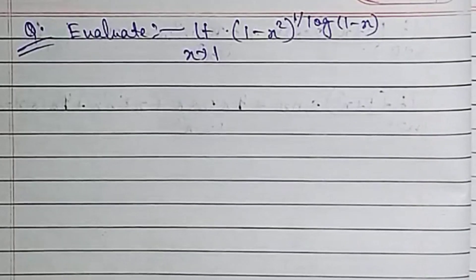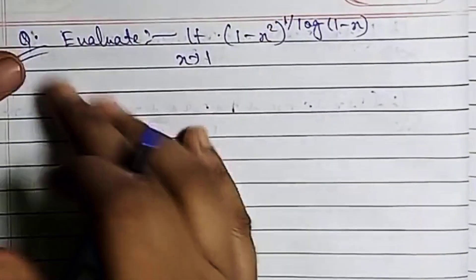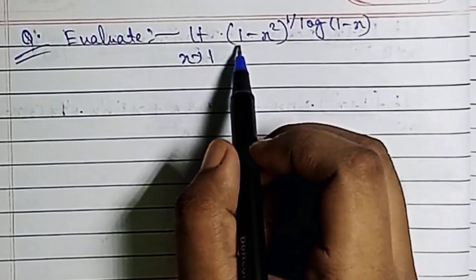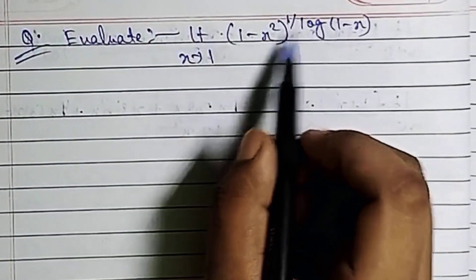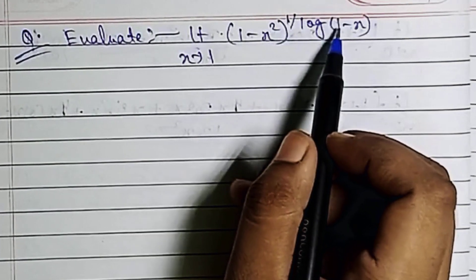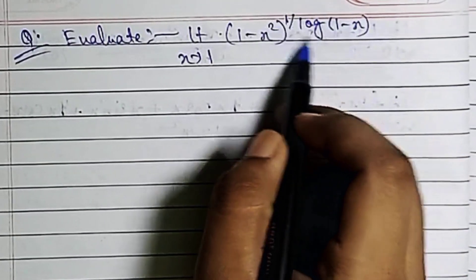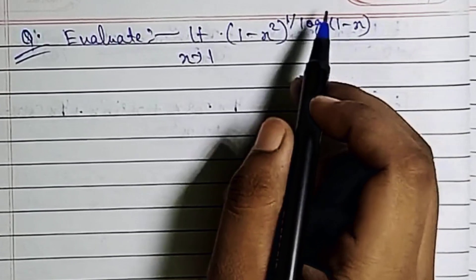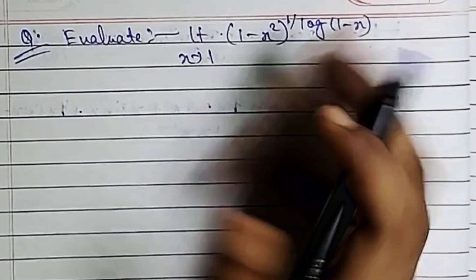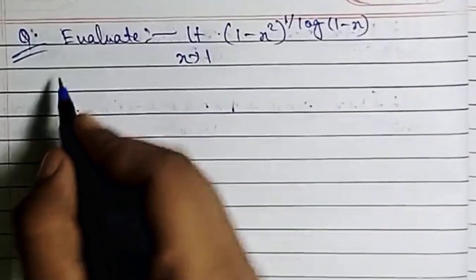Hello everyone and welcome to the channel. For all our new viewers, this is the channel. This problem is about limits — specifically limit x tends to 1 of (1-x²)^(1/log(1-x)). If you want to copy this, you need to be concerned with potential limits to enter block loading.